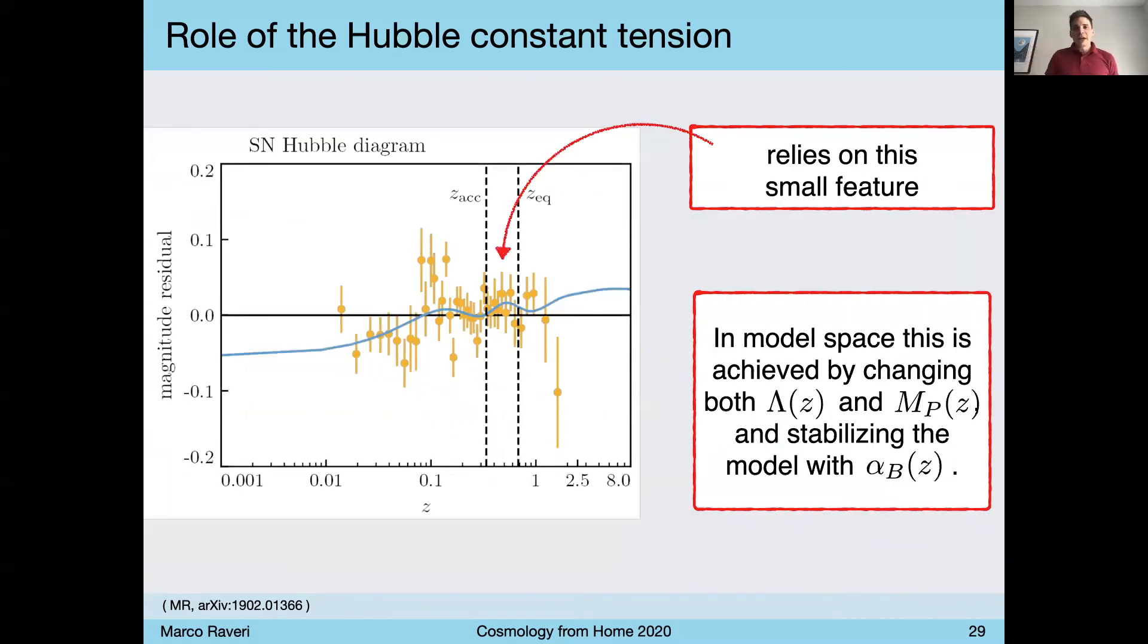It also tells us other interesting things. From a model perspective, this type of tension-relieving relies on three ingredients. It relies on jointly the effect of having a time-dependent cosmological constant and Planck mass, and in arranged in such a way that they need non-negligible higher order couplings to stabilize the resulting theory. And this model working with the data relies on the small feature you see in the Hubble diagram. It can't really be achieved if we just had a simple step through the data.